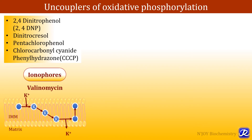Ionophores are also uncouplers. These ionophores are lipid-soluble substances that increase the permeability of the inner mitochondrial membrane to certain ions, thereby destroying the proton gradient and leading to inhibition of ATP synthesis. For example, valinomycin combines with potassium and then traverses the membrane to enter the mitochondrial matrix, abolishing the membrane potential, which is a part of the proton motive force.